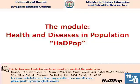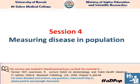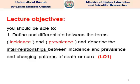As-salamu alaykum. Welcome to our module Health and Disease in Population. We will talk about session four today: Measuring Disease in Population. We have four learning objectives. You should be able to define and differentiate between the terms incidence and prevalence, and describe the interrelationship between incidence and prevalence and changing patterns of death or cure.